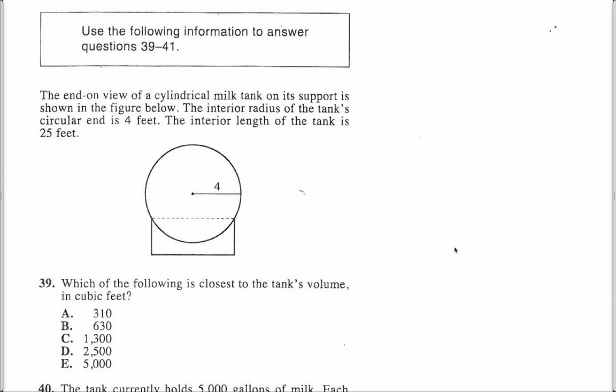Number 39. The end-on view of a cylindrical milk tank on its support is shown in the figure below. The interior radius of the tank's circular end is 4 feet and the interior length of the tank is 25 feet.